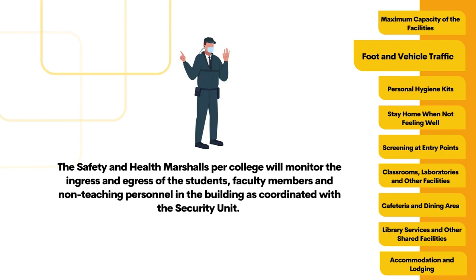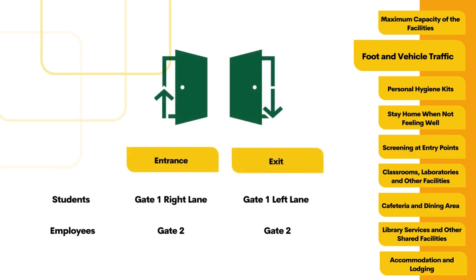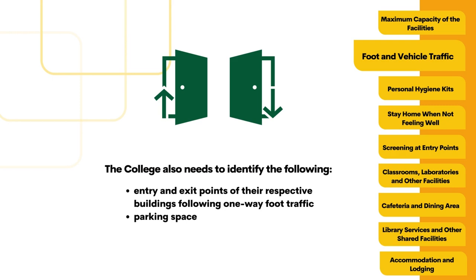The safety and health marshals per college will monitor the ingress and egress of students, faculty members, and non-teaching personnel in the building as coordinated with the security unit. Gate 1 Right Lane will serve as the entry point for students while Gate 2 is dedicated for employees. When leaving the campus, Gate 1 Left Lane is designated as the exit gate for students while Gate 2 is for employees. The college also needs to identify entry and exit points of their respective buildings following one-way foot traffic, as well as parking spaces.